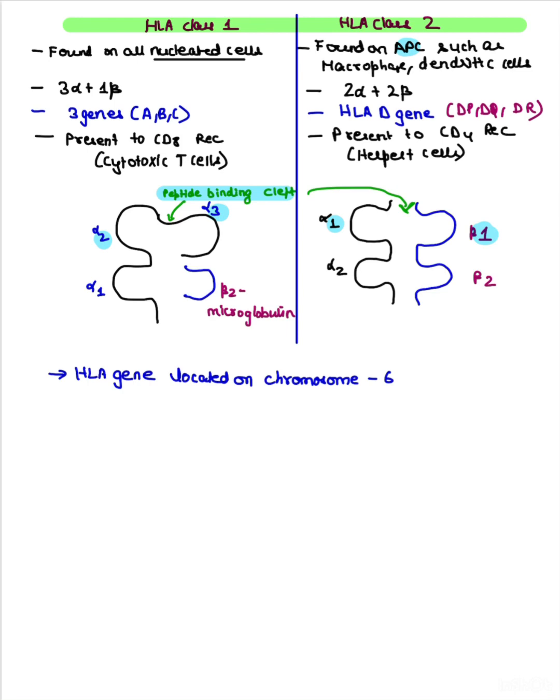If you see alpha 1, alpha 2, alpha 3, and beta 2 microglobulin. HLA class 2, since the name is 2, has 2 alpha and 2 beta: alpha 1, alpha 2, beta 1, beta 2. Remember this 2. If you write 2 in Roman numerals, this is alpha 1, this is alpha 2, this is beta 1, and this is beta 2.